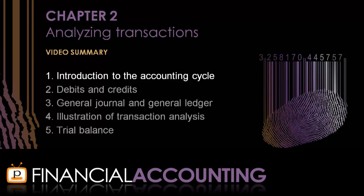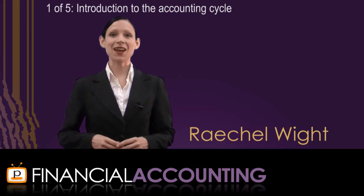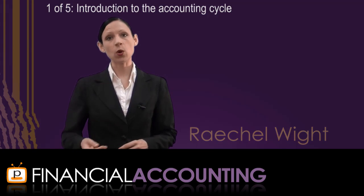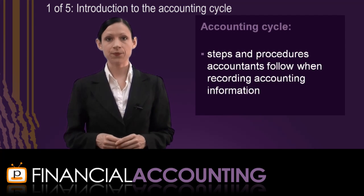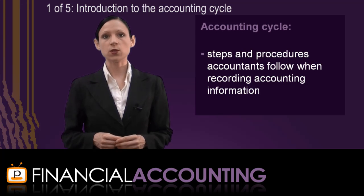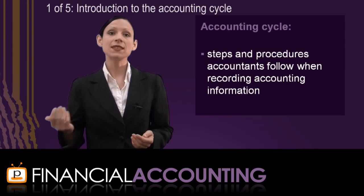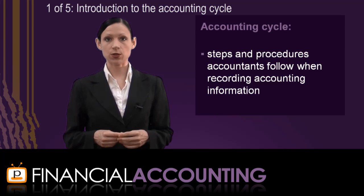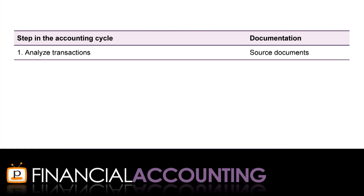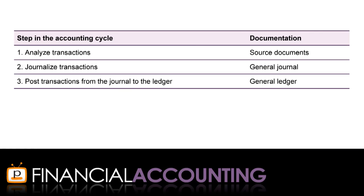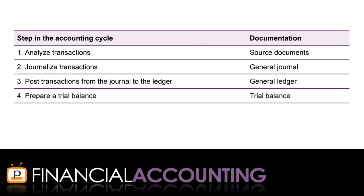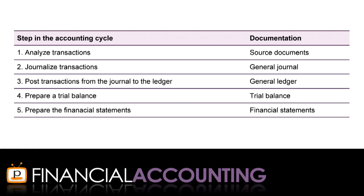So let's start by answering the question: what is the accounting cycle? The accounting cycle is the steps and procedures that accountants follow when recording accounting information. These steps are always performed in the same order and have documents that match each step. The cycle starts by analysing transactions from source documents, which are records like an invoice that provide written evidence that a transaction has occurred. As we can see from this table, once we've analysed the source document and decide we need to record a transaction, the next steps are to journalise the transaction in the general journal, post it to the general ledger, prepare a trial balance, and prepare the financial statements.